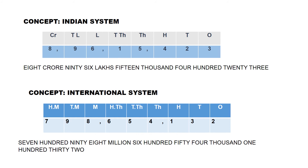We read the number according to the commas. Reading our example: it is eight crore, ninety-six lakh, fifteen thousand, four hundred and twenty-three. Now, the international system is different from the Indian system. Its place values are: ones, tens, hundreds, thousands, ten thousands, hundred thousands, millions, ten millions, and hundred millions. Here also, ones, tens, and hundreds form one family. Then a comma. The thousands family has three members: thousands, ten thousands, and hundred thousands.